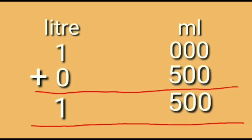Now we will see how we can solve this sum in written form. Like units are always added. The quantity of milk in the first packet was 1 litre, so we will write 1 under the column of litre and 00 under the column of milliliter. The quantity of milk in the second packet was 500 milliliter, so we will write 0 under the column of litre and 500 under the column of milliliter. When we add these like units together, we get 1 litre and 500 milliliter.